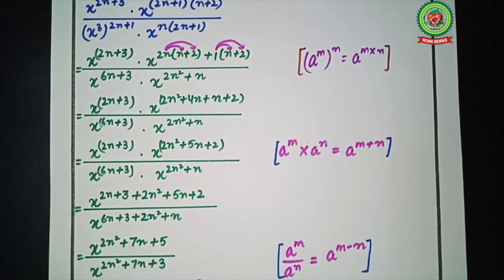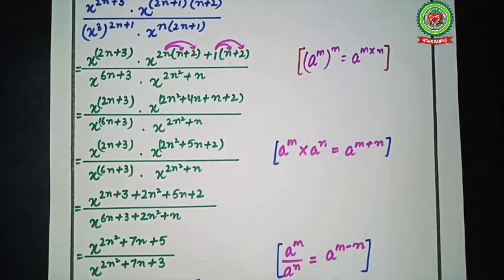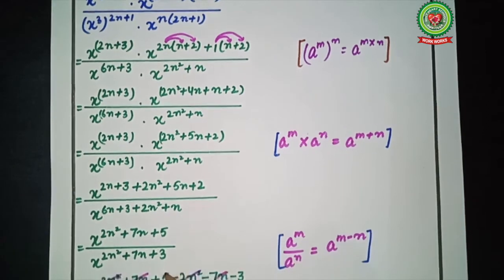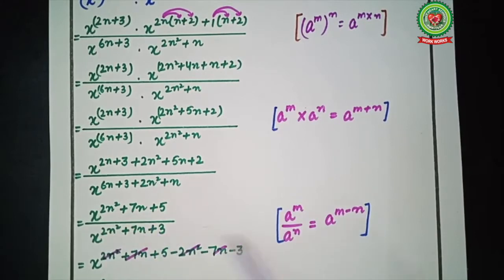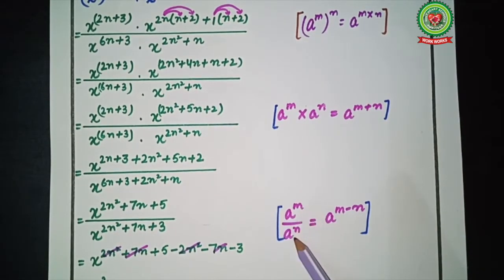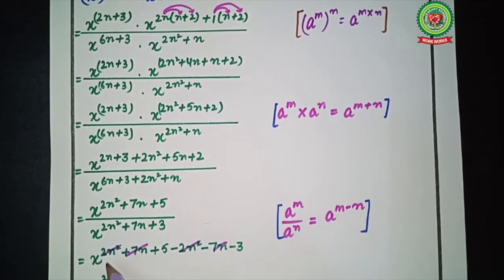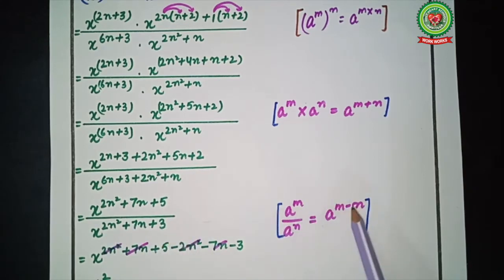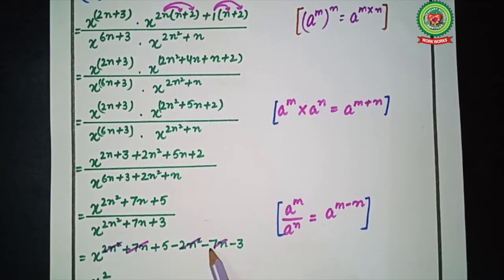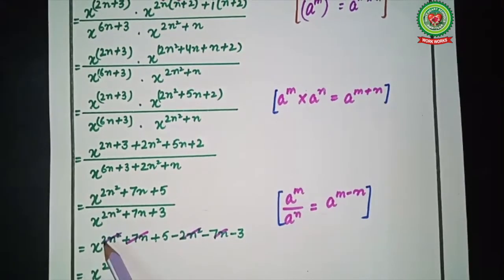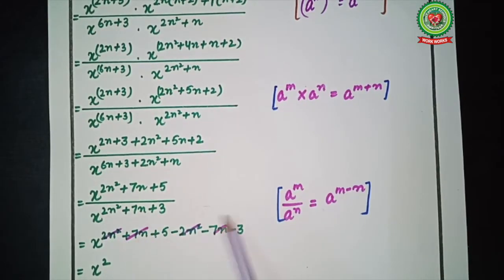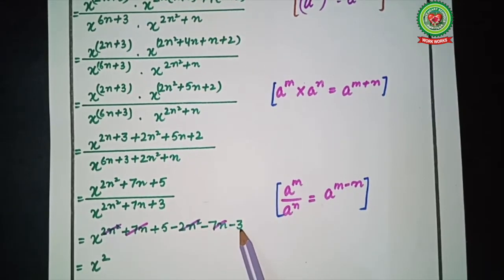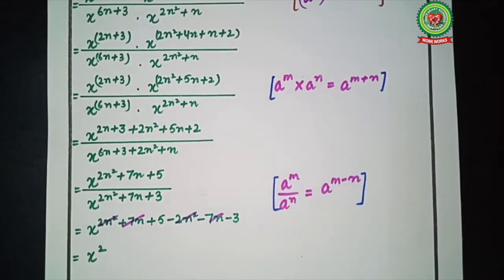After solving, we get x raised to power 2n squared plus 7n plus 5, upon x raised to power 2n squared plus 7n plus 3. Now we apply the division rule: a raised to power m divided by a raised to power n equals a raised to power m minus n. So we subtract the powers: 2n squared plus 7n plus 5 minus 2n squared minus 7n minus 3. The 2n squared terms cancel, the 7n terms cancel, and we are left with 5 minus 3 equals 2. Our answer is x raised to power 2.